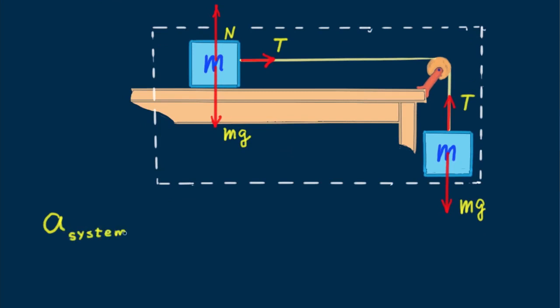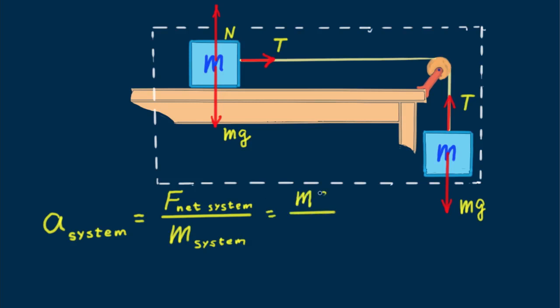For acceleration of the system, where we emphasize our system, the mass being accelerated is 2m. And we see that the system accelerates at half g — that's half the acceleration of free fall. This makes sense because the gravitational force on one mass is being used to accelerate two masses.